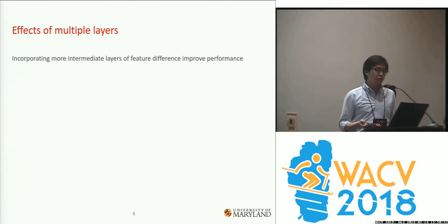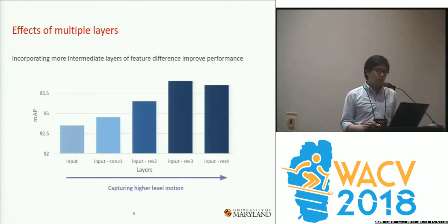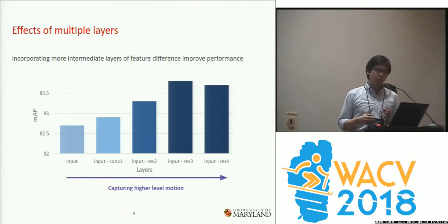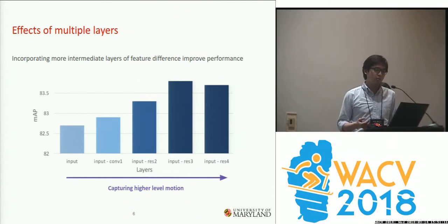One question would be: are the intermediate layer feature differences really useful, or is it just the RGB input difference that does all the job? We train multiple models — from taking just the RGB difference input to taking more higher-level feature differences — and it shows that taking more high-level feature differences improves the results consistently.